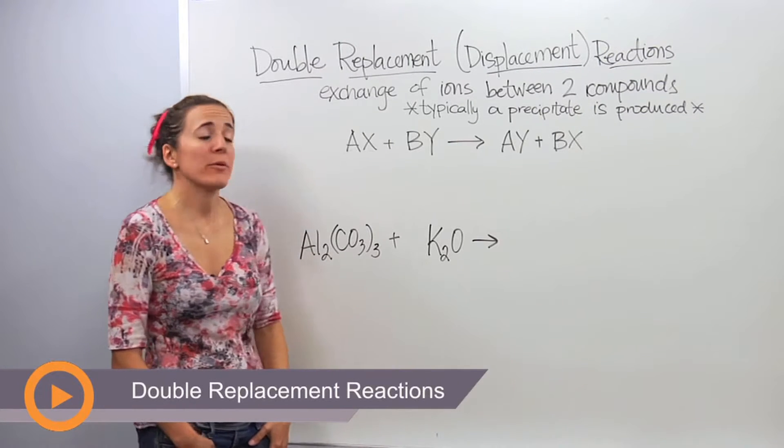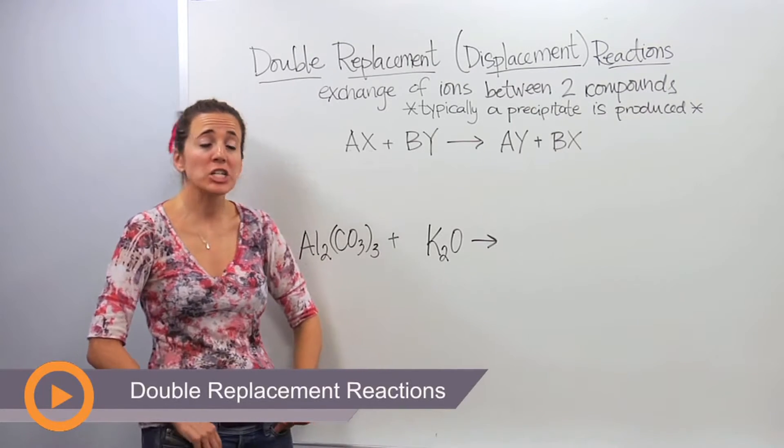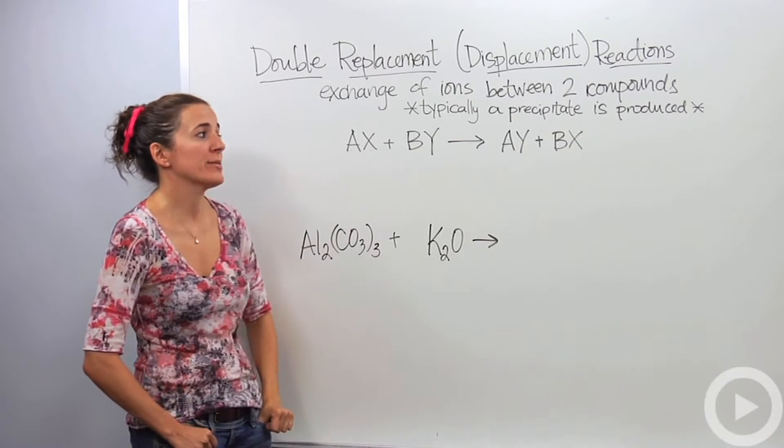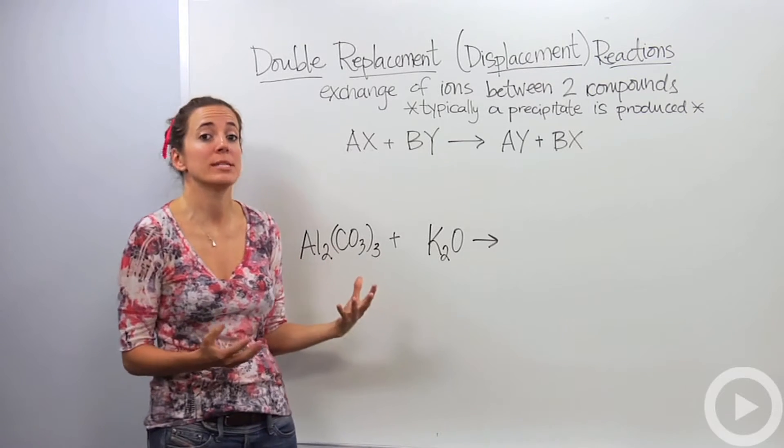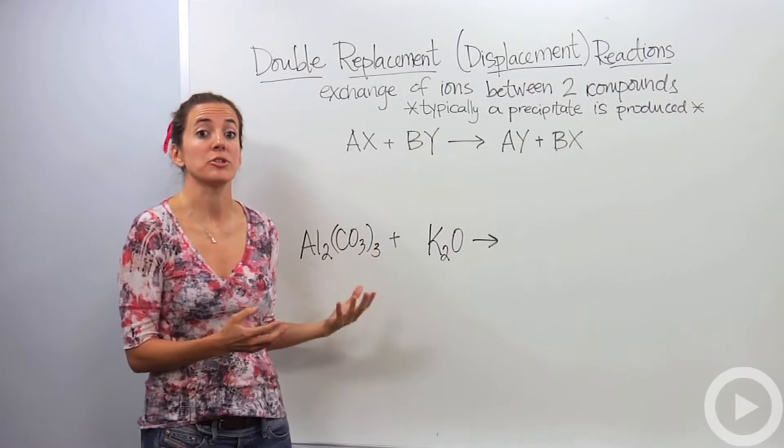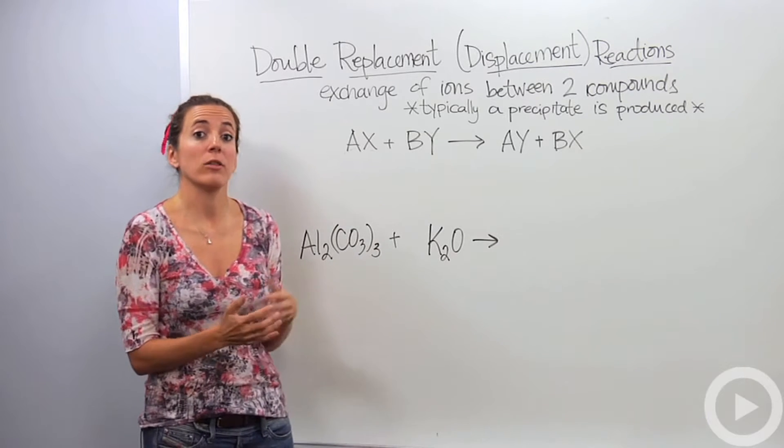All right, so we're going to talk about double replacement reactions, also known as double displacement reactions. This is an exchange of ions between two compounds. Typically what's produced is what we call a precipitate, that's a solid within an aqueous solution or a liquid solution. We'll actually get a picture of what that looks like soon.